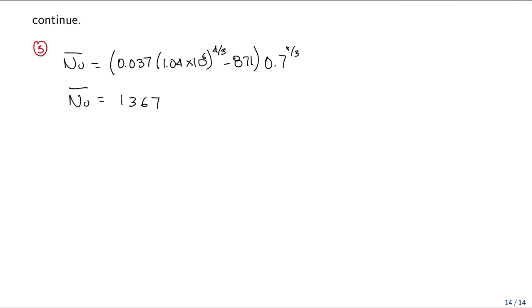With this value from Nusselt, remember that Nusselt number is equal to H bar L, this is for Nusselt_L, divided by K. We can solve for H bar and we have equal to Nusselt multiplied by K and divided by L. And this is equal to 39.2 Watt per meter squared Kelvin.